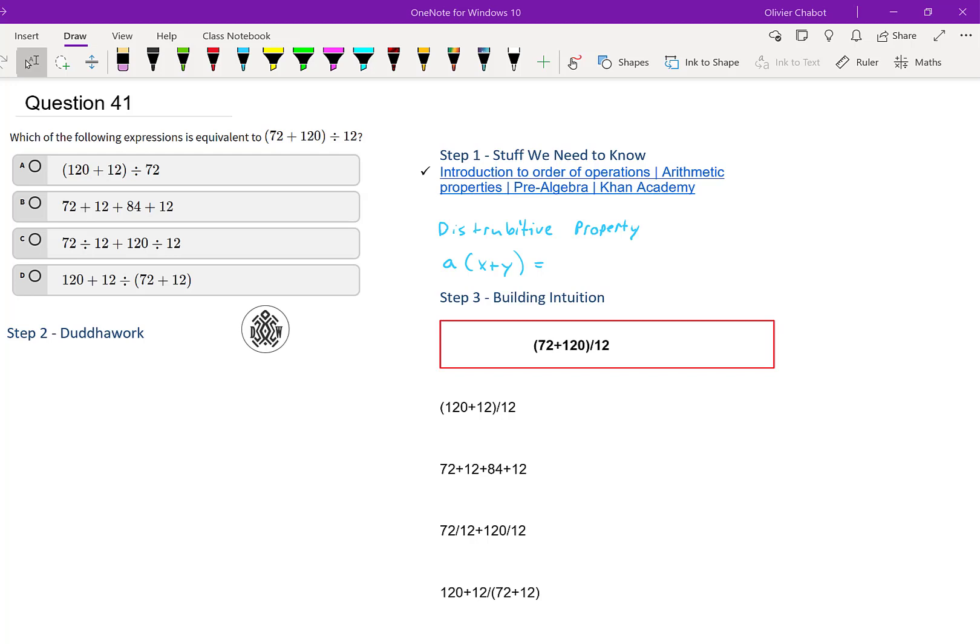Here we're asked which of the following expressions is equivalent to 72 plus 120, all divided by 12. And we have four different expressions. So I encourage you to attempt this problem, as you probably have a good idea, and you can give it a reasonable attempt. That way you'll learn more from watching the video.